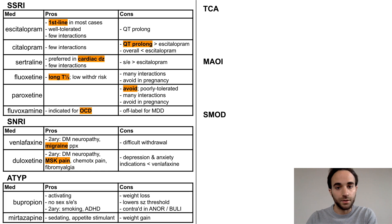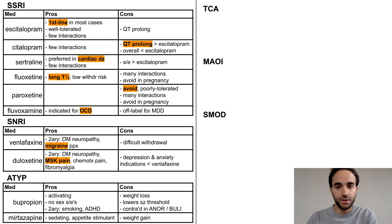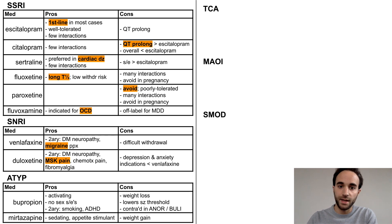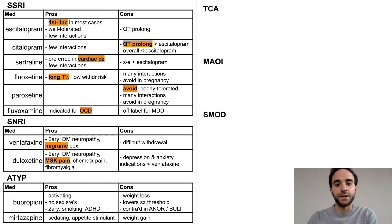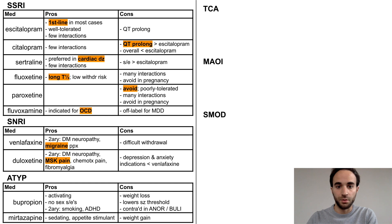Next are the atypicals. Bupropion is activating, meaning it tends to improve energy and motivation. It may also contribute to appetite suppression and weight loss. This is in contrast to mirtazapine, which is more sedating and may stimulate the appetite and cause weight gain. Bupropion is also notable for its lack of sexual side effects, its secondary indications for smoking cessation and ADHD, and that it lowers the seizure threshold. Therefore, bupropion is generally contraindicated in patients with seizure disorders and eating disorders such as anorexia and bulimia, in which weight loss can also lower the seizure threshold.